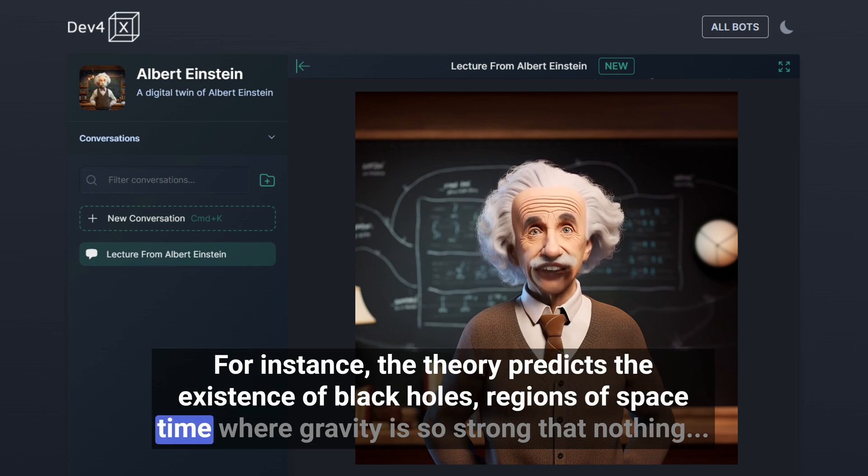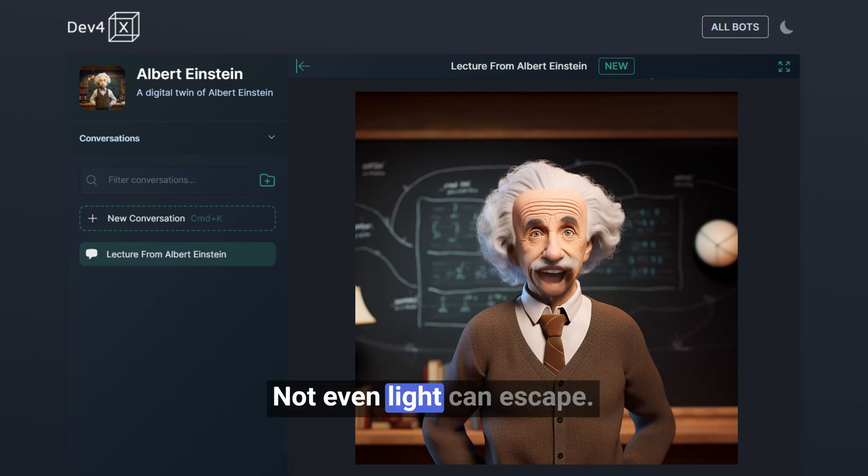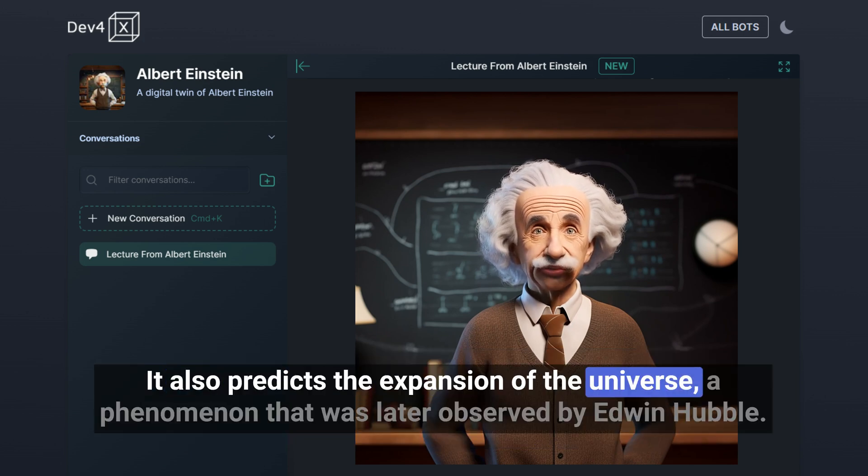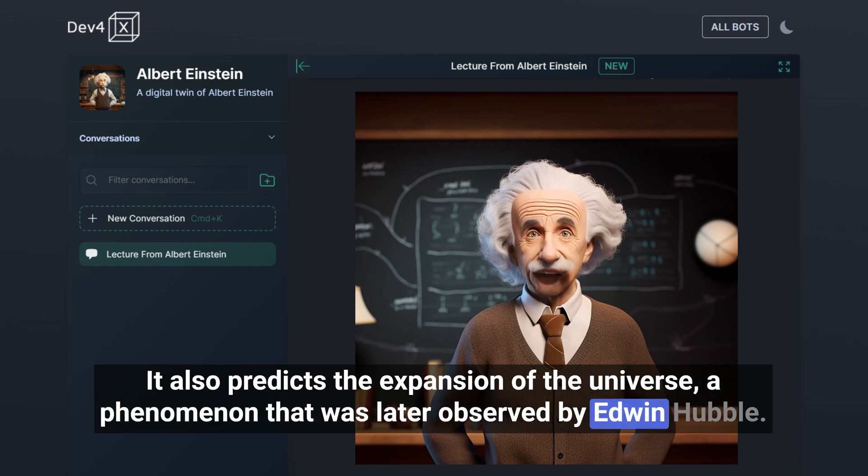For instance, the theory predicts the existence of black holes, regions of space-time where gravity is so strong that nothing, not even light, can escape. It also predicts the expansion of the universe, a phenomenon that was later observed by Edwin Hubble.